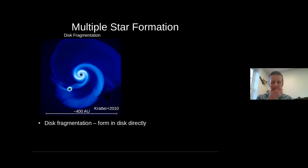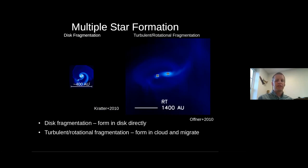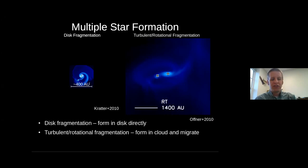Overall, we wanted to find out how these multiples are forming, hoping the statistics will help us better understand that. Are they forming mostly from fragmentation directly in the disk — in which case we'd see them at scales of tens to hundreds of AU — or from turbulent fragmentation of the molecular cloud or rotational fragmentation, in which case we'd see them at hundreds to thousands of AU scales with fewer at small radii, except for those that were able to migrate in? We're trying to understand the formation mechanisms by taking a statistical approach.